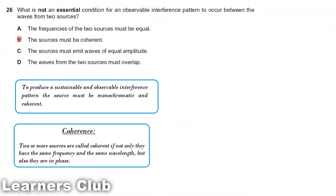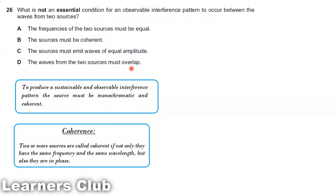Evaluating the options: Option A — frequency of the sources must be equal — yes, that is part of the definition of coherence. Option B — the sources must be coherent — yes, required for an observable interference pattern. Option C — the sources must emit waves of equal amplitude — that is NOT a necessary condition; interference can occur even if the amplitudes differ. Option D — waves from the two sources must overlap — yes, required to form fringes. So the answer is option C.